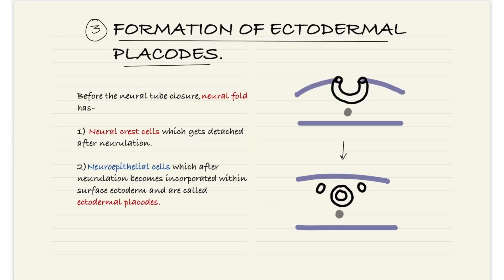The last part is the formation of ectodermal placodes. Before the neural tube closure, the neural fold has both neural crest cells and neuroepithelial cells. The neural crest cells get detached after neurulation, while the neuroepithelial cells, after neurulation, become incorporated within the surface ectoderm and are called ectodermal placodes.